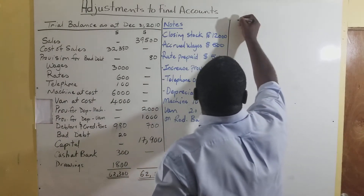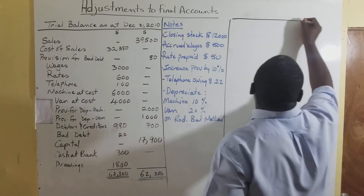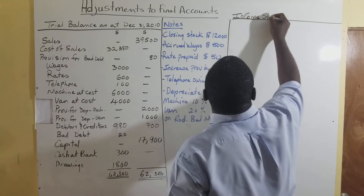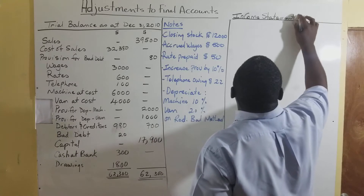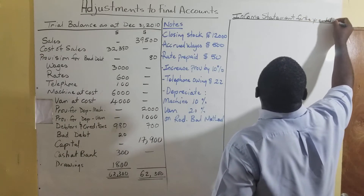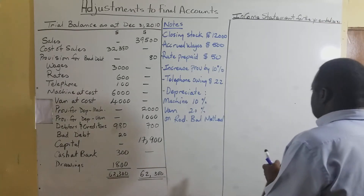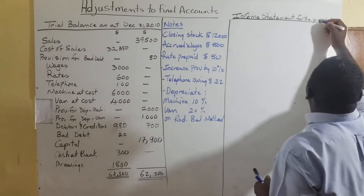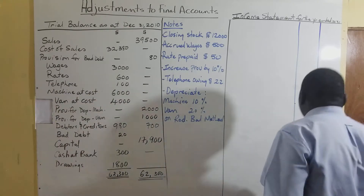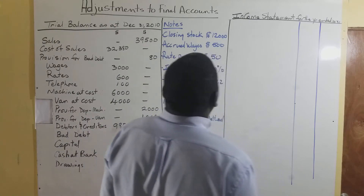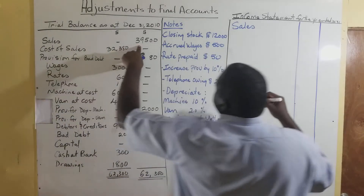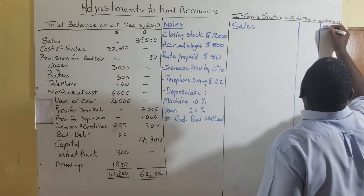We're going to now make the income statement for the year ended December 31st. We'll be using two major columns to display the monies. We start with our sales. Our sales figure is $39,500.